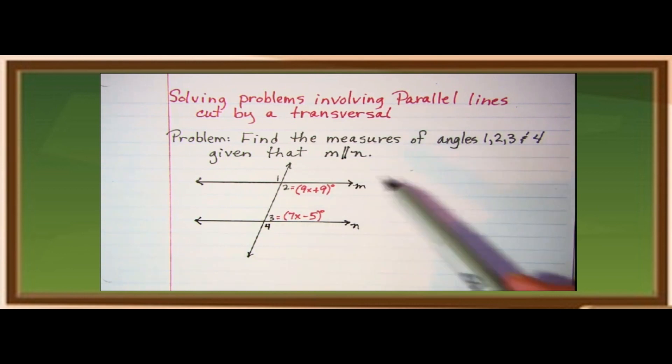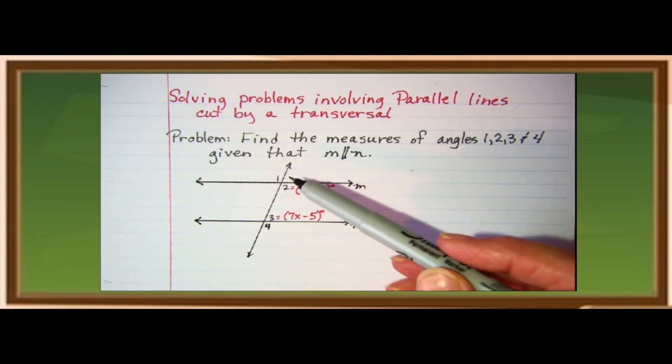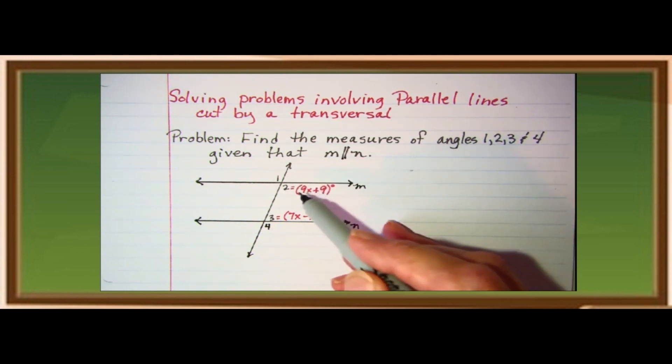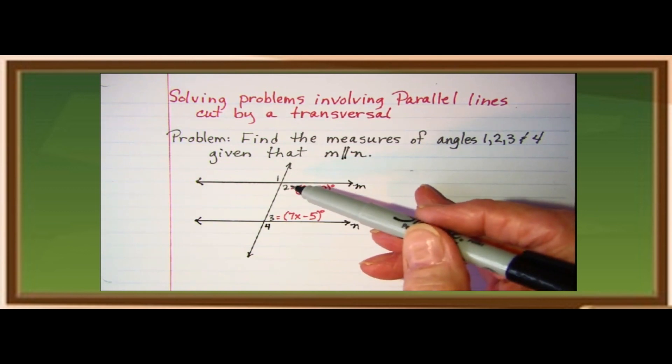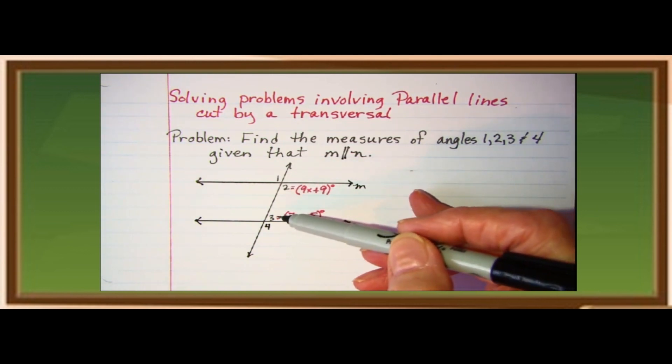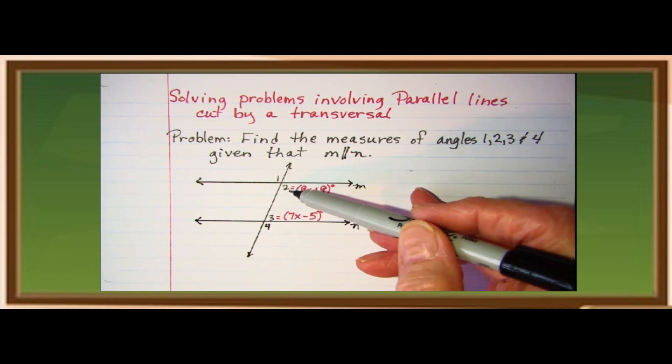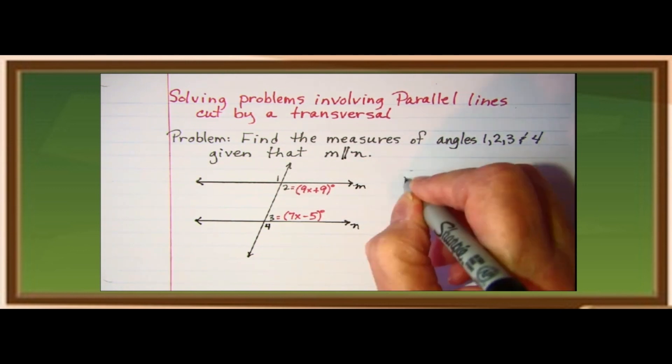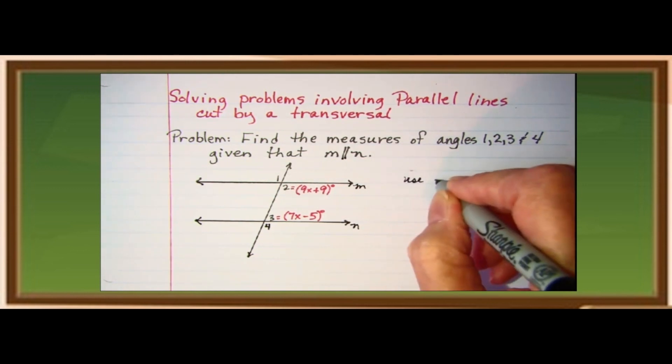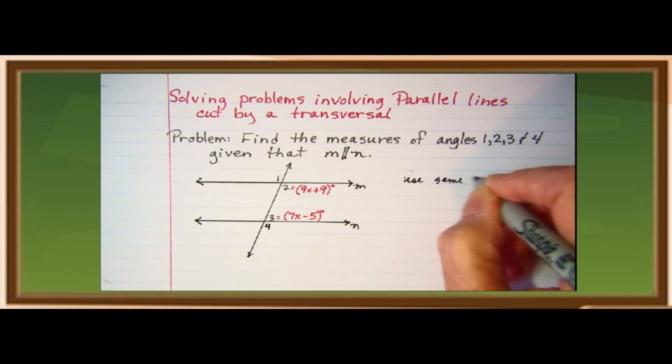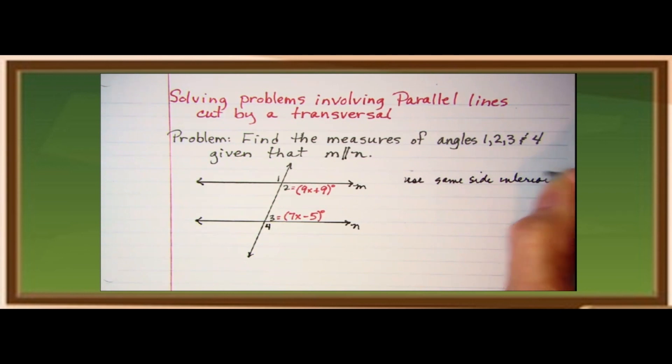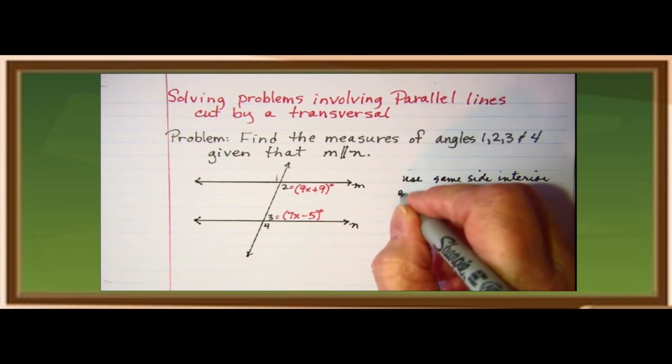And now, whenever there are lines cut by a transversal, you know that there are angles that are congruent. Now, we will be using this problem, angles one and angles three. Same side interior angles are supplementary.